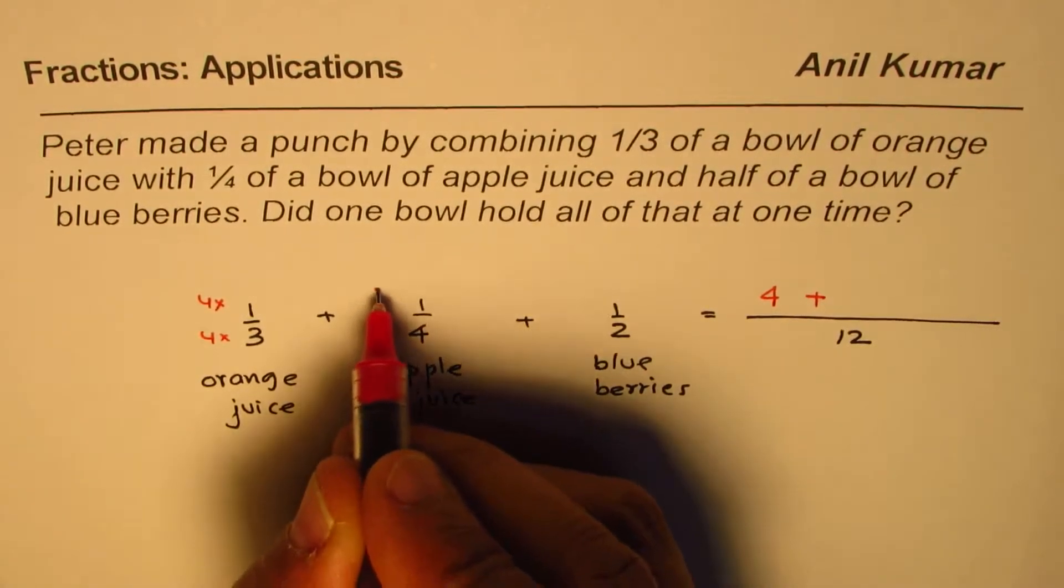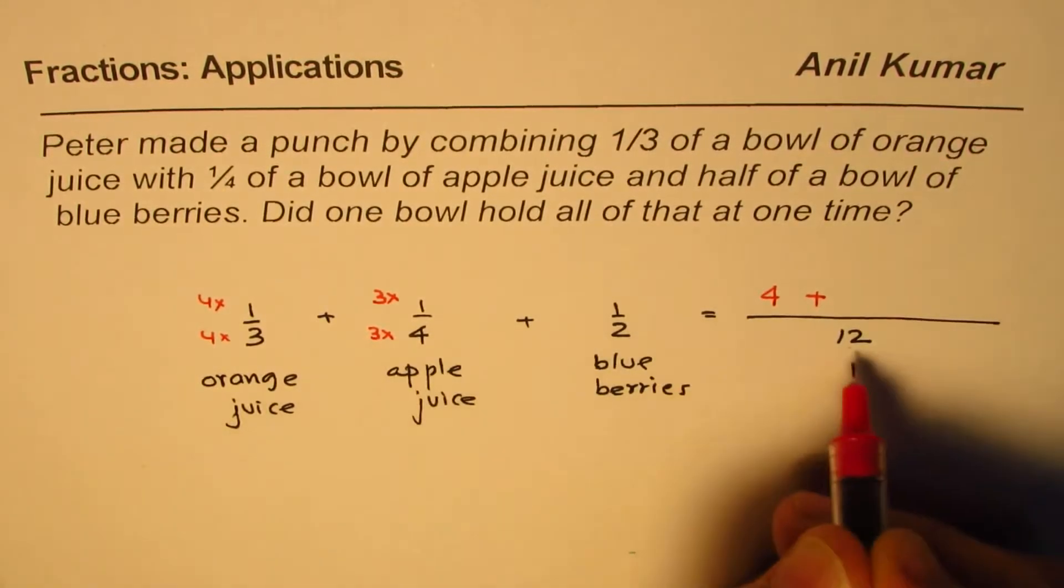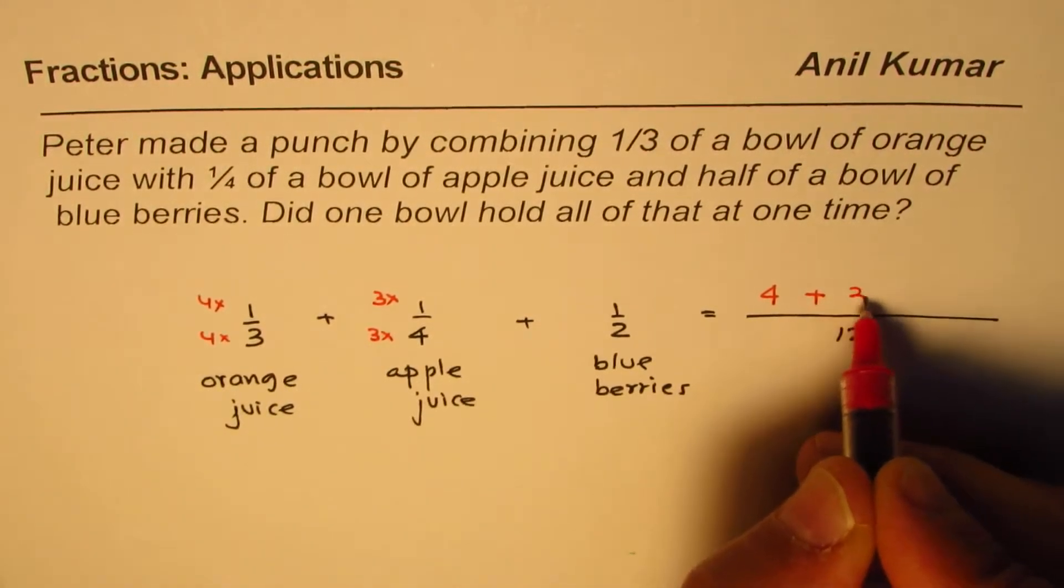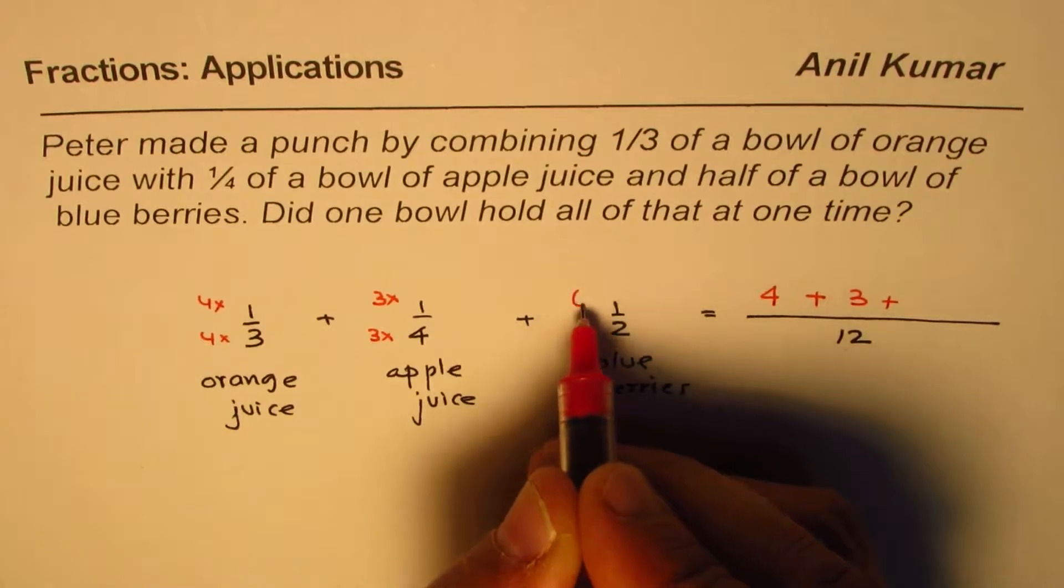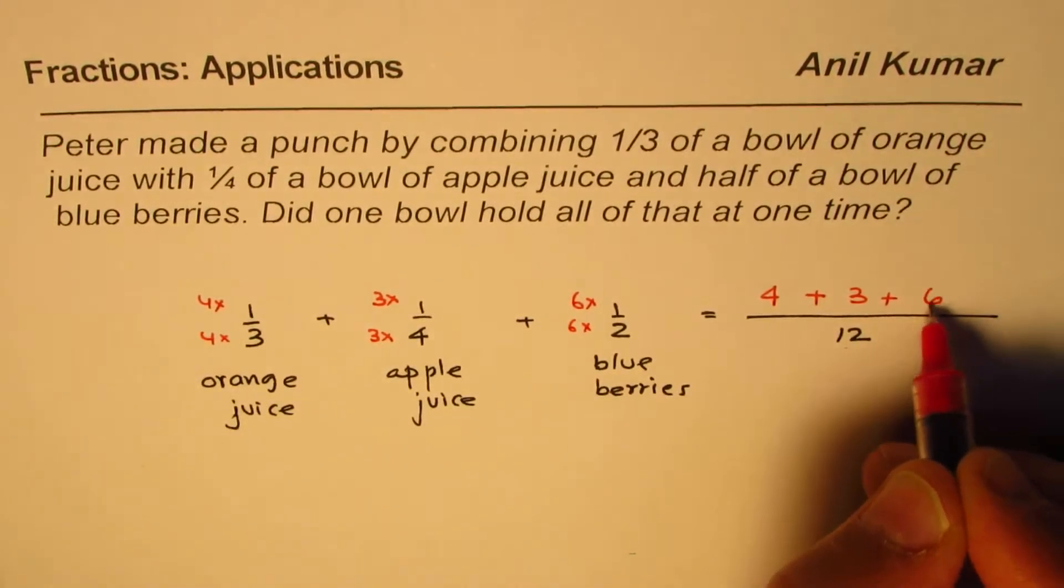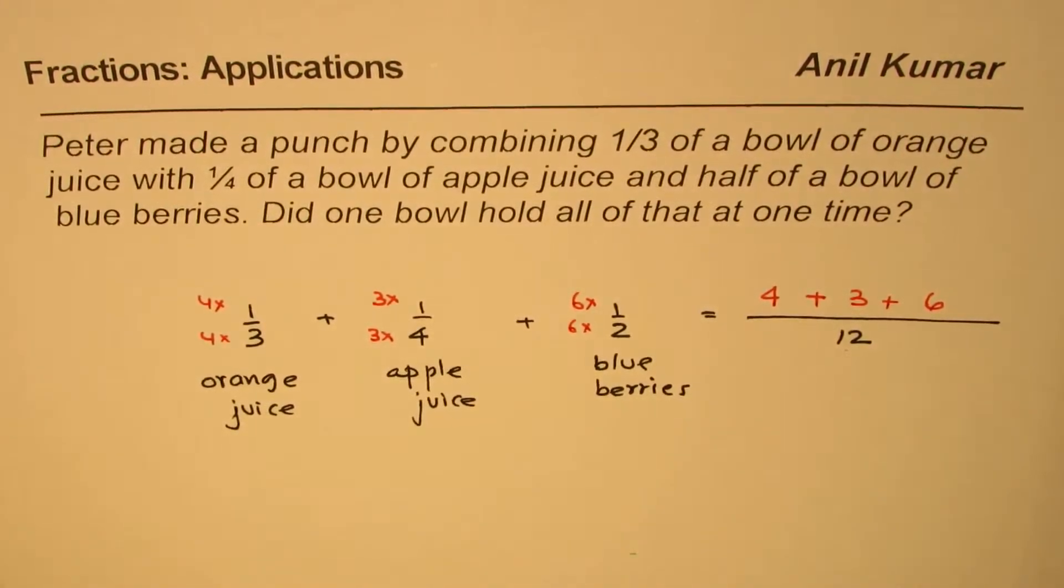Plus, this should be multiplied by 3. Three times 4 is 12, 3 times 1 is 3. And this should be multiplied by 6, both numerator and denominator. That will give us 6 on the top.